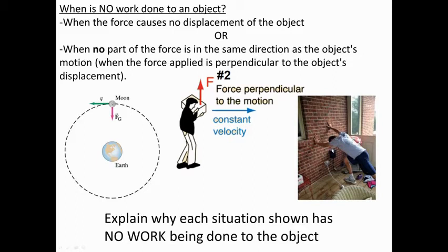Finally, in this situation, this person is exerting a large force. However, what is the displacement — what's the distance moved? That wall is not moving at all. So he has a force, but there's zero distance, meaning there's no work being done.